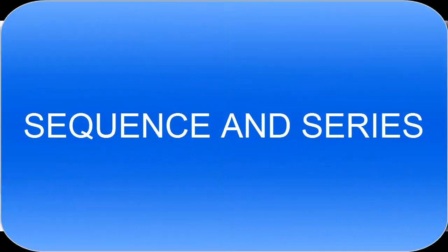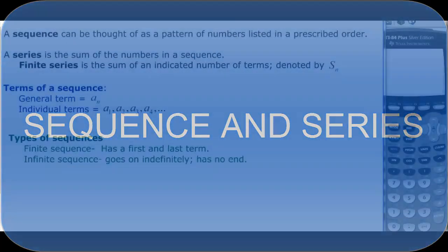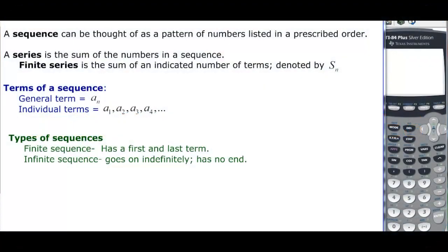This video will talk about sequences and series. A sequence can be thought of as a pattern of numbers listed in a prescribed order. Think about the sequence of events that you do — you have to do them in a certain order. It's a pattern of numbers, so it continues to do that over and over again.